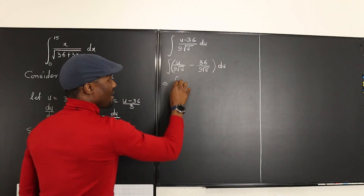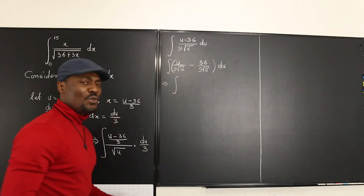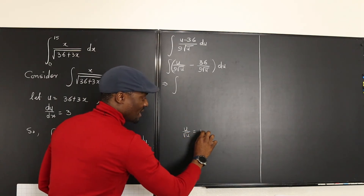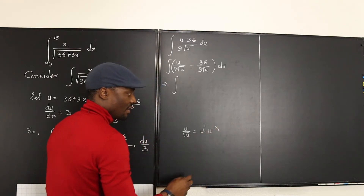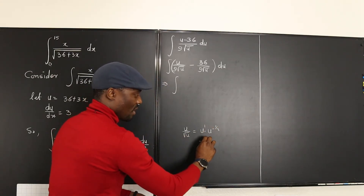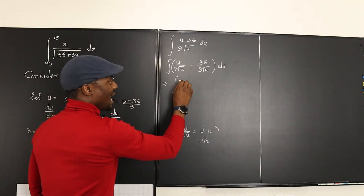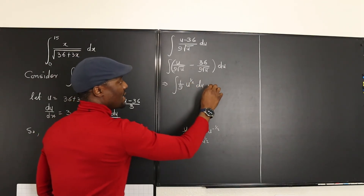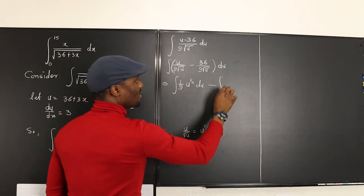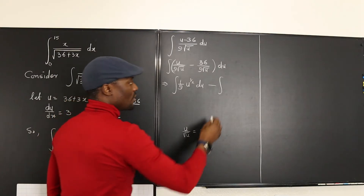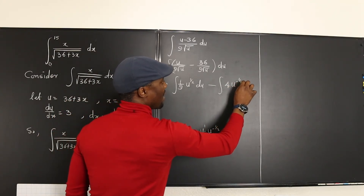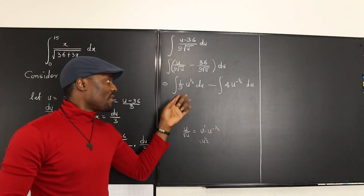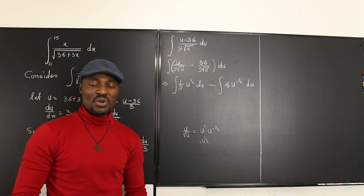Recall that u over square root of u equals u times u to the negative one-half, which by the product rule gives u to the one-half. So the first term becomes (1/9) times u to the 1/2. The second term simplifies as 36/9 equals 4, giving 4 times u to the negative 1/2. We now have two terms we can easily integrate.